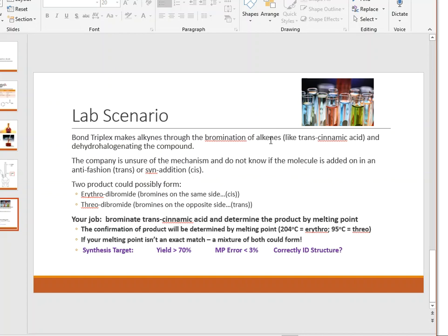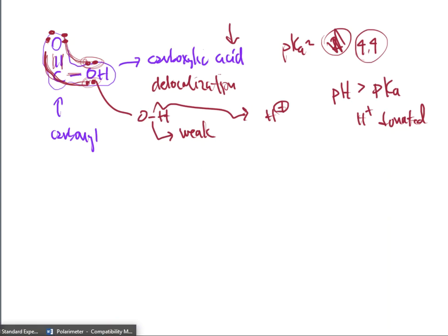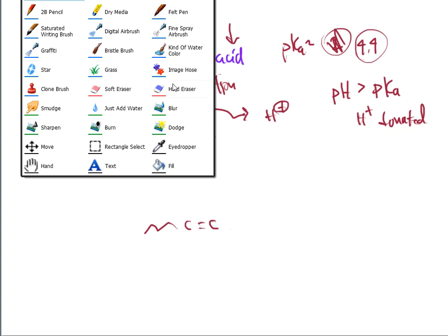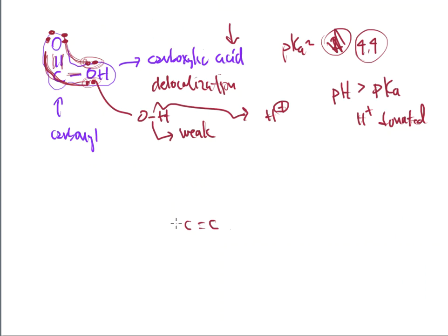With the first step — taking an alkene and brominating it — two products could possibly form: the erythro dibromide (bromines on the same side) or the threo dibromide (bromines on opposite sides). Think of those as cis and trans. Around the double bond in transcinnamic acid, the double bond breaks, opening two sites of attachment for the R groups.